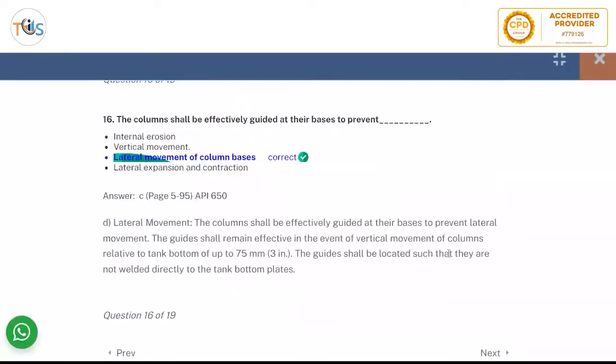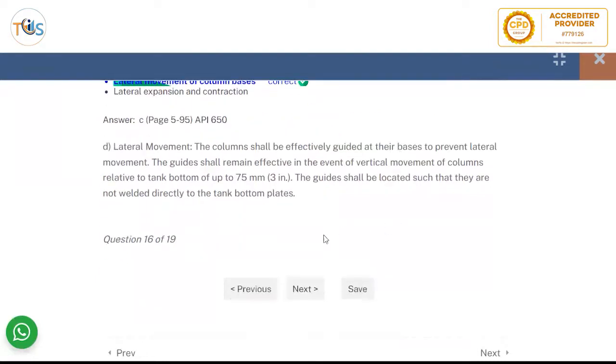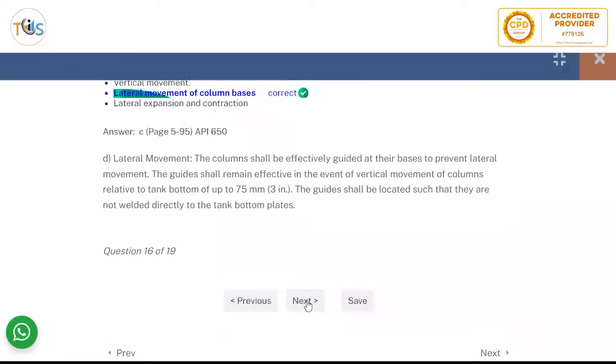The columns shall be effectively guided at their basis to prevent lateral movement on the column basis. So this makes sense. If you have lateral movements, then tank will become disabled. And if there is a number, they say how much you should resist the vertical movement of columns. It's three inch. That's a minimum requirement that it should resist. The columns can move with respect to time and still stay safe. But this would be an open book question if there is a number involved. Otherwise you just, this is a common sense.